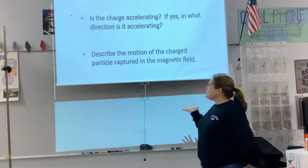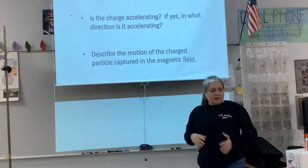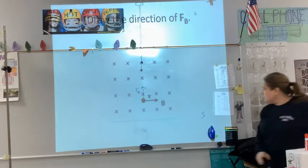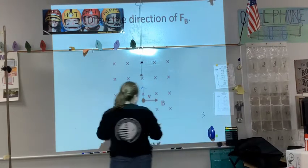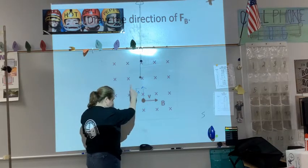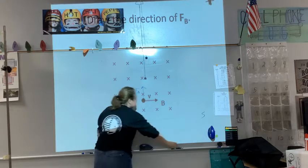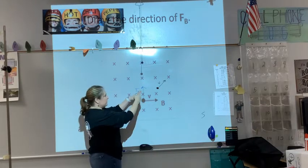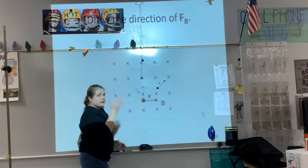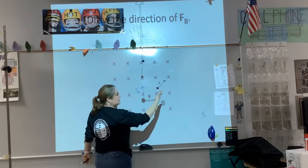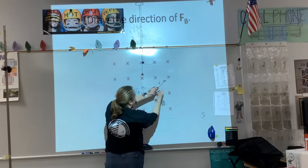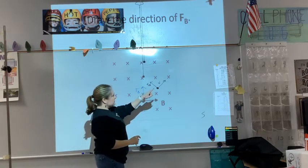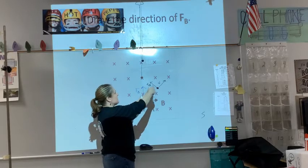It then asks us to describe the motion of a charged particle trapped in a magnetic field. This charged particle is moving to the right but it's getting pushed up. A moment later, it would be somewhere over here with a velocity in that direction, because if it's moving that way and we push it up, it'll end up over here. Using the right hand rule from this new position — fingers into the board, thumb in the direction of velocity — the force would be directed up and to the left.